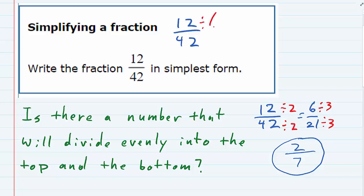And that would have given us 12 divided by 6 and 42 divided by 6, which in the top is 12 divided by 6 is 2, and 42 divided by 6 is 7.